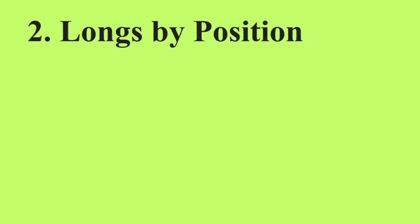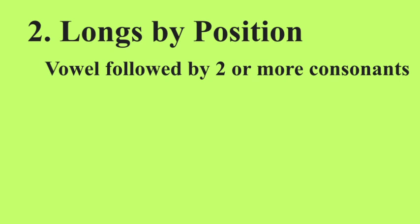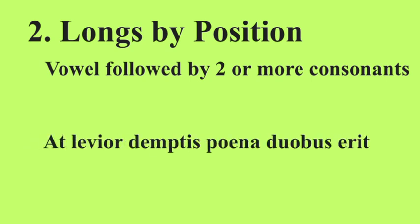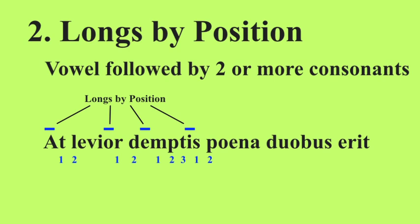Let's move on to longs by position. In a line of poetry, a syllable is long by position if it contains a vowel followed by two or more consonants. I call this the two-consonant rule, and it's the most important rule in figuring out syllable length. We'll mark long all the vowels that are followed by two or more consonants — it doesn't matter if the consonants are in another word. The OE in 'poena' is a diphthong and so it's long by nature, and the O in 'duobus' is also long by nature. Everything else will be short, which we'll mark with a little curve.